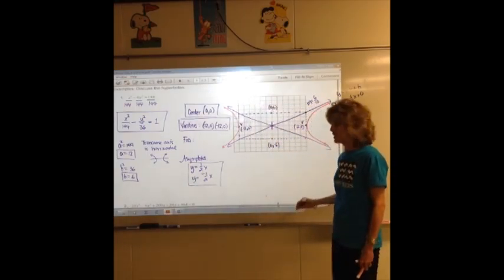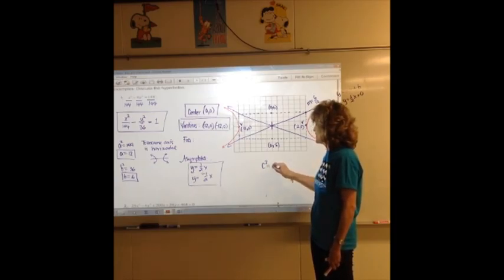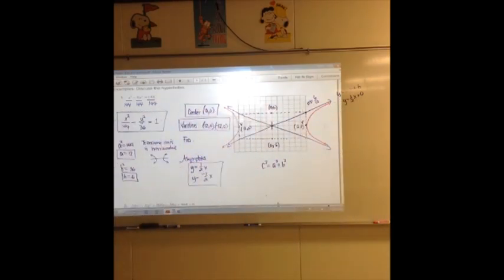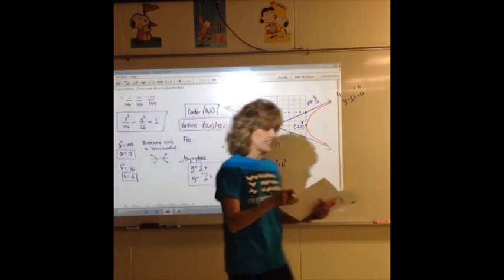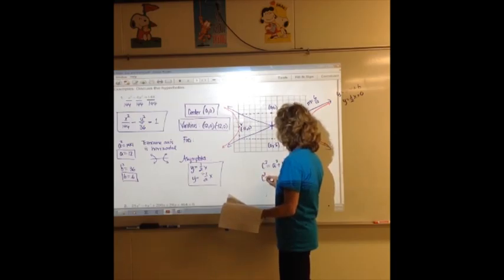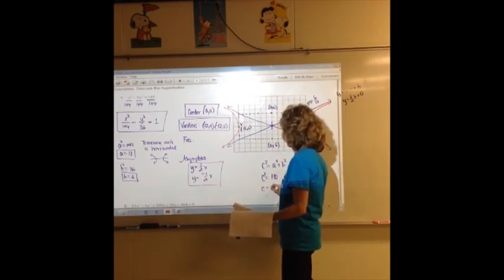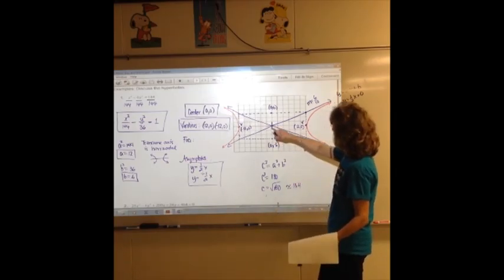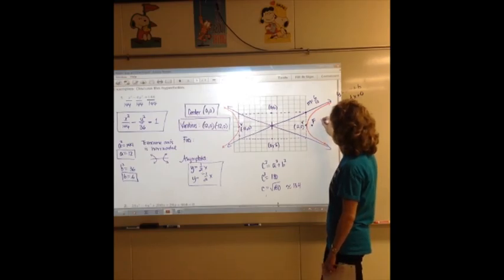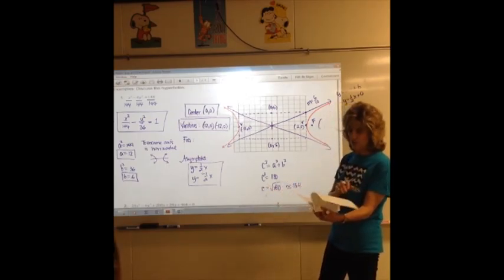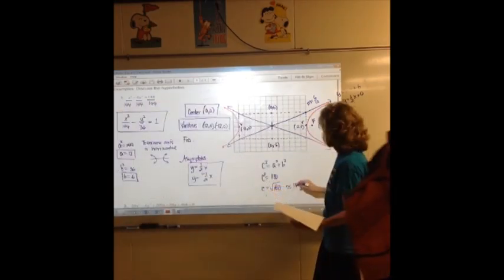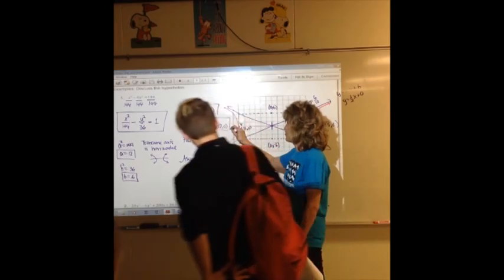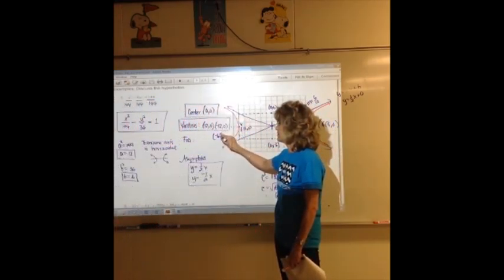The only thing we have left is to find the foci, so that means we've got to find c. Here's the equation you use to find c: a squared plus b squared. c squared turns out to be 180, so c is the square root of 180, which gives you about 13.4. So if you go out 13.4 on the transverse axis, there is a focus. When you simplify the square root of 180, it simplifies to be 6 square root of 5. So to name this focus, it is 6 square root of 5, 0. And there's another focus over here, negative 6 square root of 5, 0.